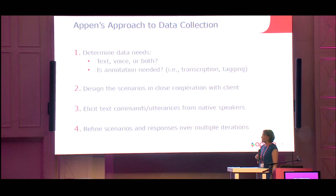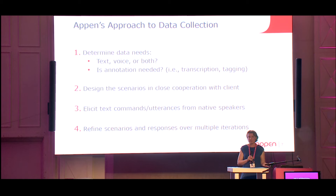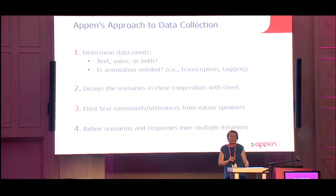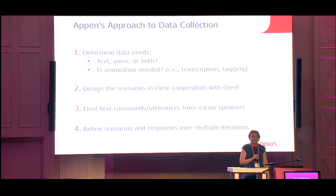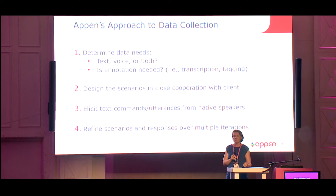First of all we need to determine what the interaction is — is this based on text, is this based on voice? If we need to record speech we usually need to provide other types of annotations, so maybe orthographic transcription. If the data collection is not fully scripted, we may also need different types of tagging — perhaps tagging product names in utterances or tagging for intent. Sometimes these tags are predefined, but even if they are predefined the speakers don't always behave as you expect, so you may need to make some revisions.